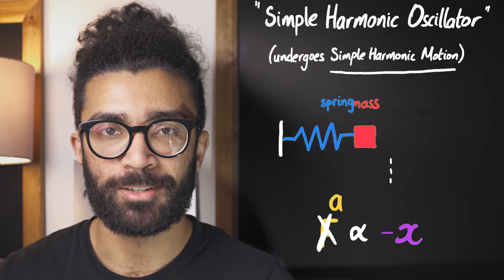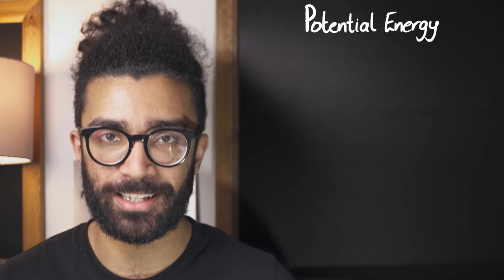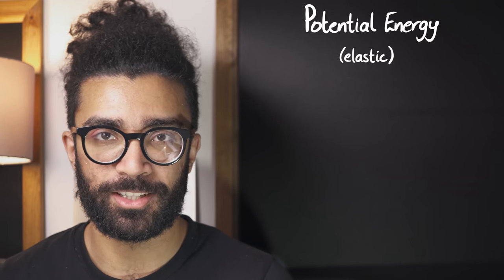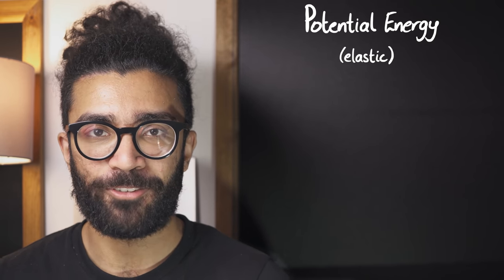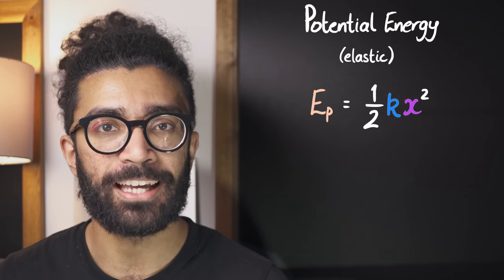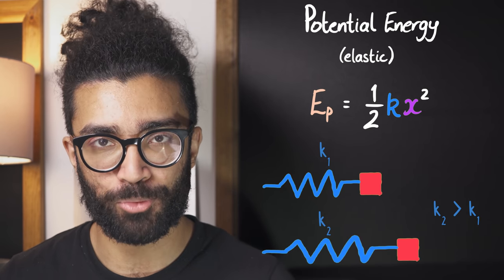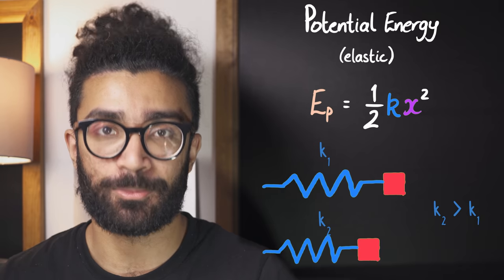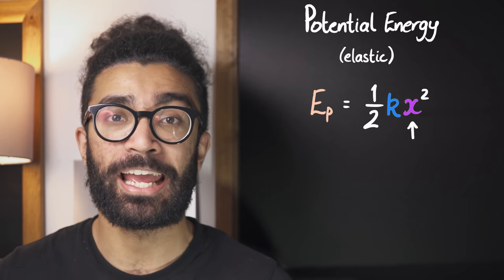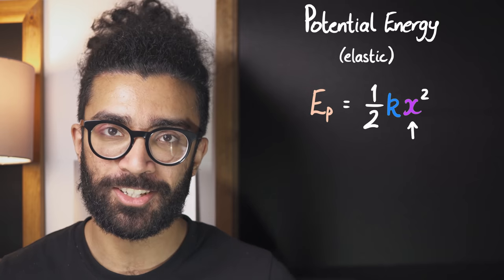Another way to think about a simple harmonic oscillator is by considering what's known as its potential energy. In this particular case, we'll be looking at the elastic potential energy stored in the spring. Some of you may be familiar with the fact that this potential energy for a spring is given by half kx squared, where k is known as the spring constant — basically just a property of the spring — and x is the displacement. The important thing here is that the potential energy is quadratic; it depends on x squared, the displacement squared.